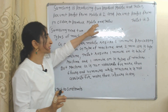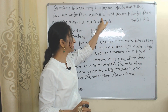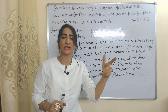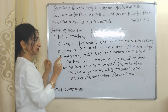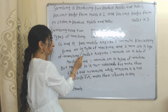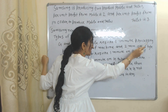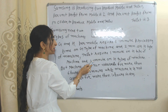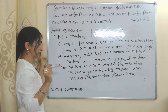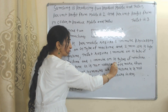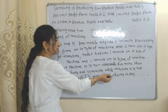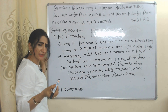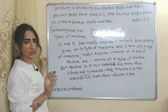Now we will see the formulation of a linear programming problem. Suppose Samsung is producing only two products: mobile and tablet. Per unit profit from mobile is 2 and per unit profit from tablet is 3. Samsung needs two types of machines, G and H. Per mobile: one minute processing time on machine G and two minutes on machine H. Tablet requires one minute on machine H. Machine G is not available for more than 6 hours and 40 minutes, and machine H is not available for more than 10 hours in a day.